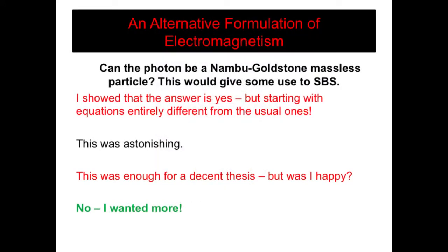The question we studied was: we do have one zero-mass particle, the photon — could that photon somehow be associated with the theorem for symmetry breaking? Maybe there was some way to put them together. I showed that the answer was yes. There were an entirely different set of equations which could describe everything we knew about quantized electromagnetism. This was pretty astonishing.